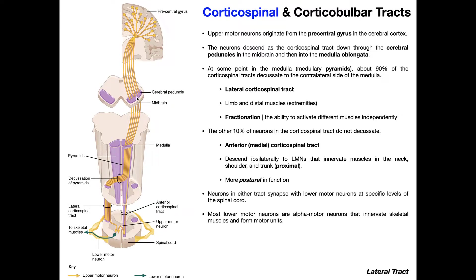Once they exit down through the midbrain, they'll move through the pons through a similar structure called the basis pontus. And then once descending through the basis pontus of the pons, they enter structures in the anterior medial part of the medulla called the pyramids. These long vertical purple structures are the pyramids of the medulla oblongata.